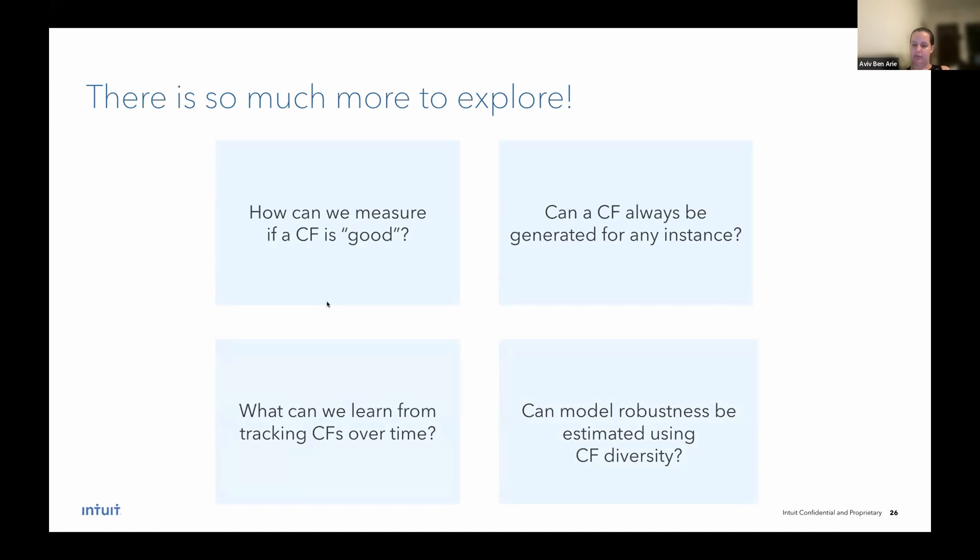And the final question, which I personally find the most interesting, is can model robustness be estimated using counterfactual diversity? Let's go back to an example I already shared before. If we have 10 counterfactuals for a specific instance explaining it, and we see that in all 10 counterfactuals, changing a single feature can flip the model decision. This can mean that the model is not very robust because an adversary attacker may easily identify the single point of failure, change the feature, and be able to bypass the model every single time.